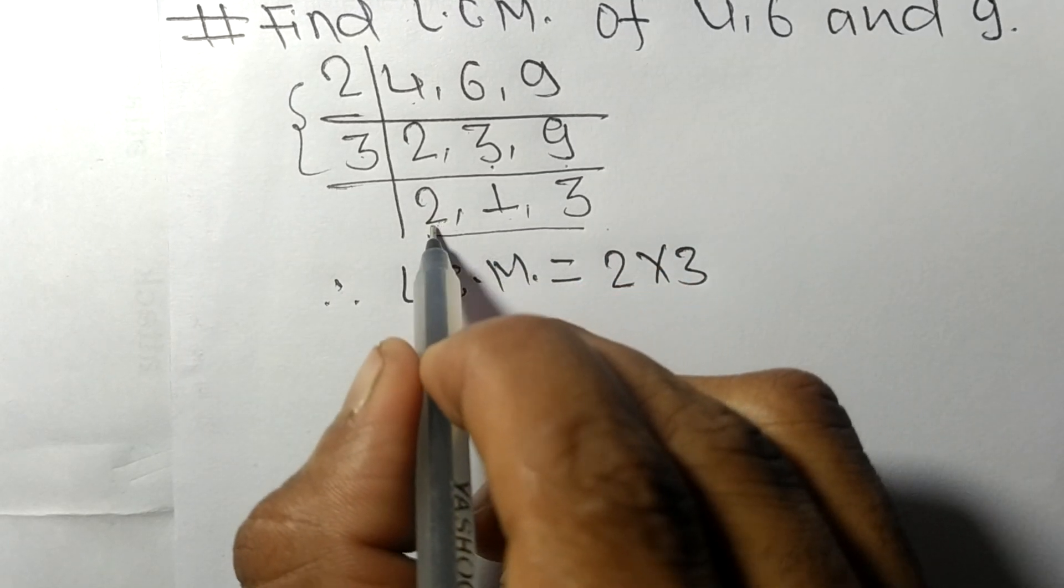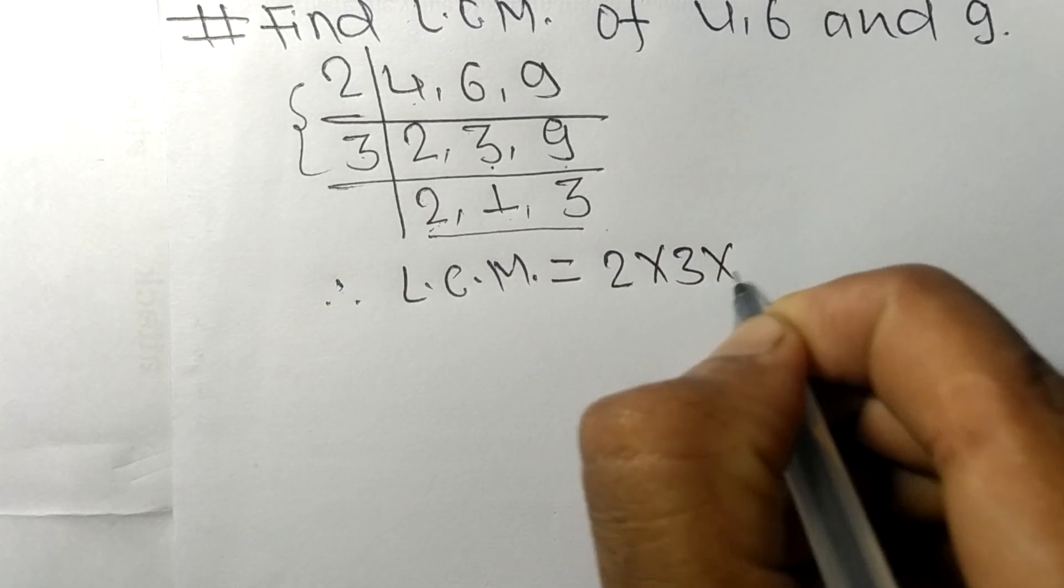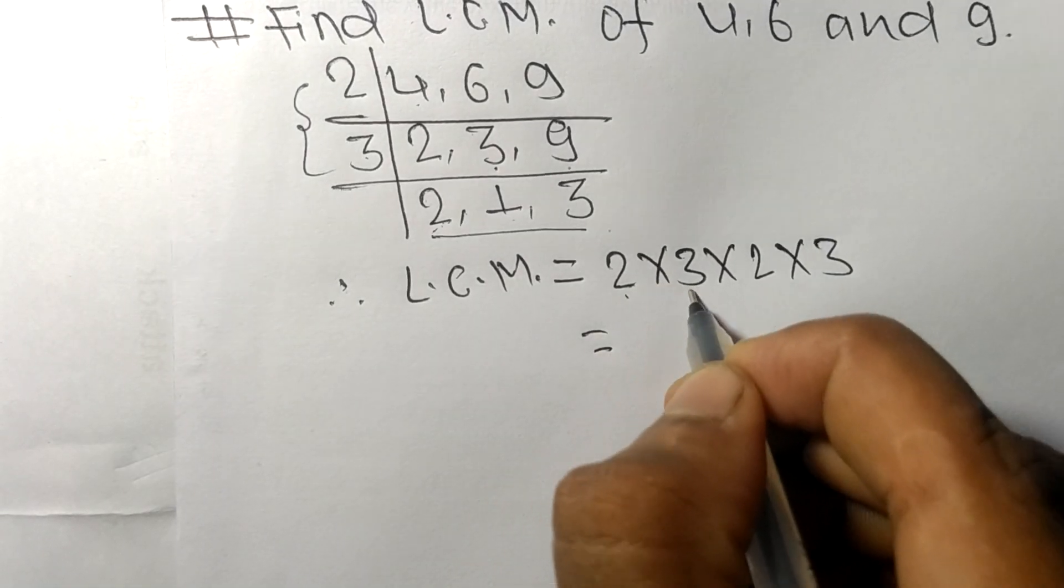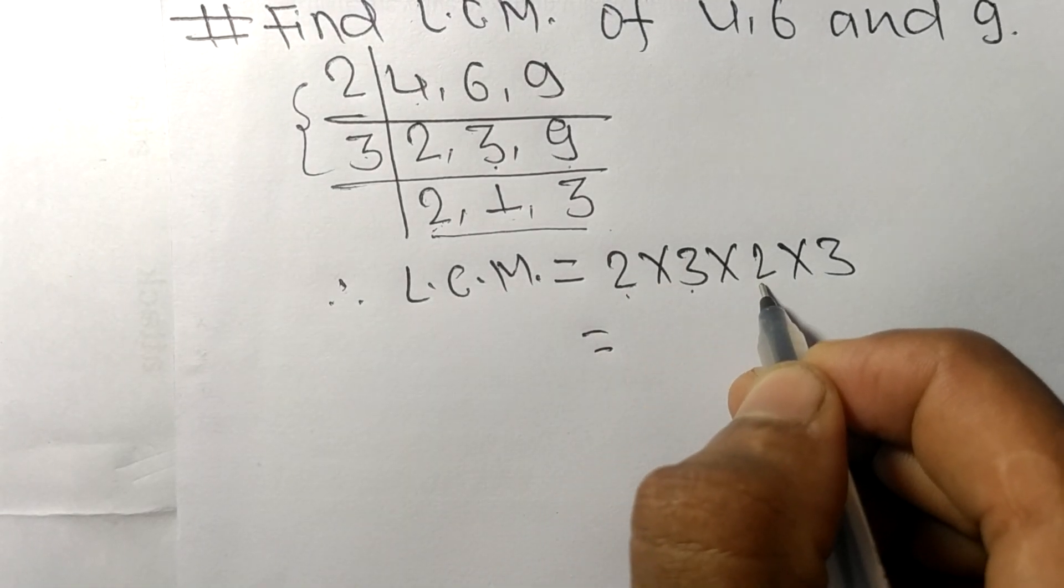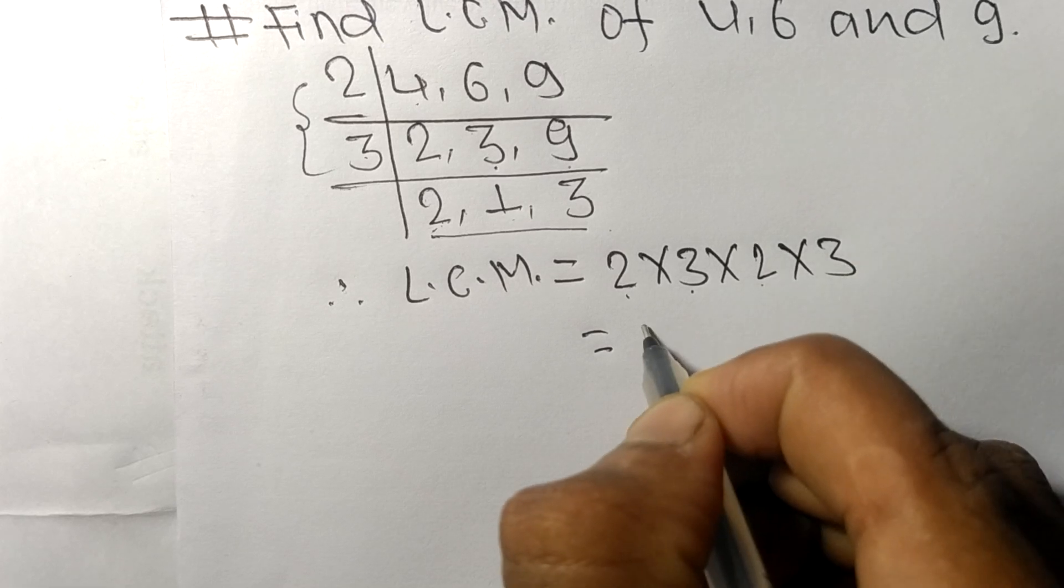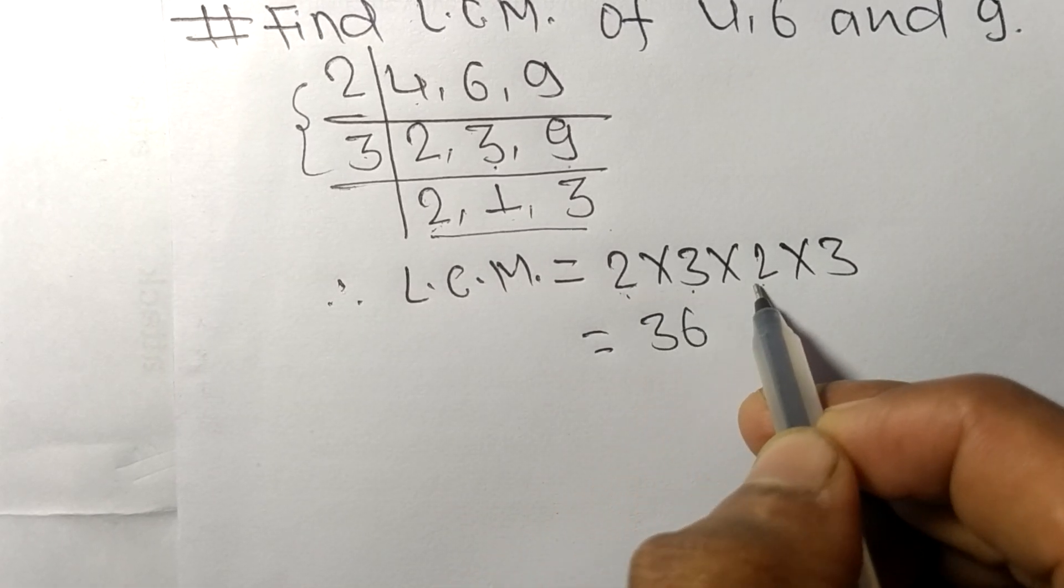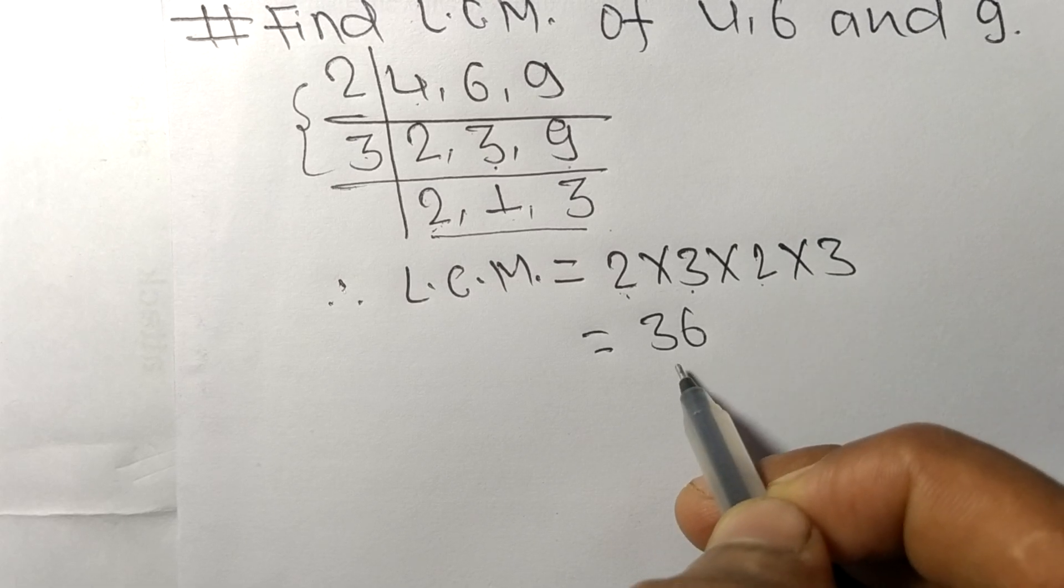So 2 times 3 means 6, 6 times 2 means 12, 12 times 3 means 36. So by multiplying all these numbers we got 36 and 36 is the LCM of 4, 6, and 9.